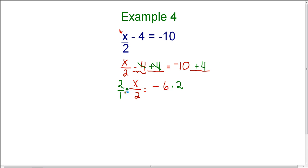We now have 2 times x divided by 2. Notice how we have 2 in the numerator and 2 in the denominator. These will simplify to 1, and 1 times x is just x.